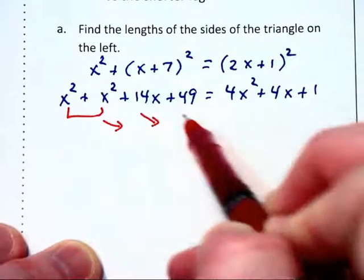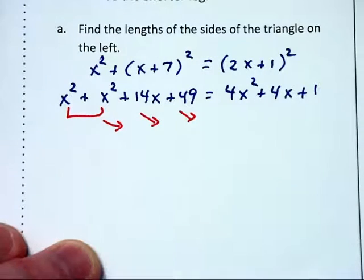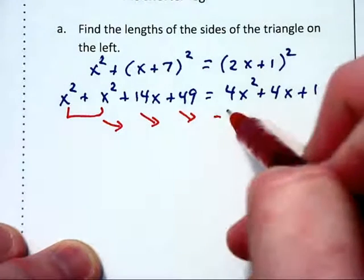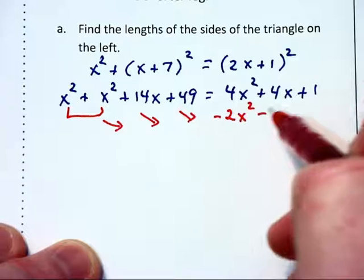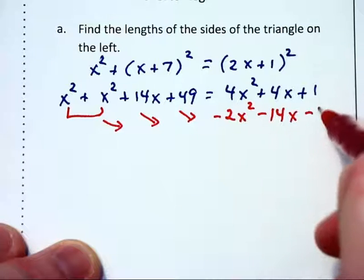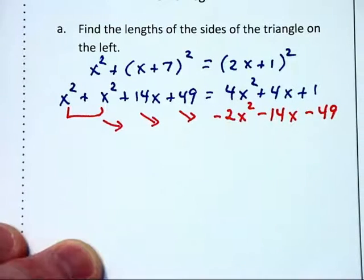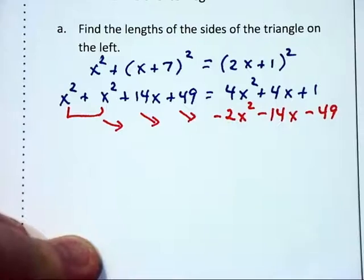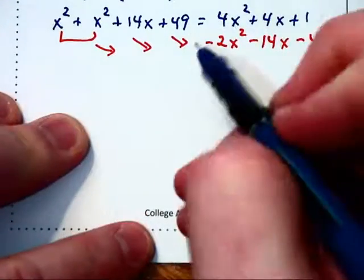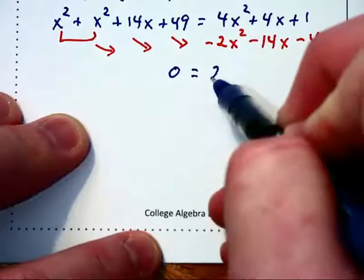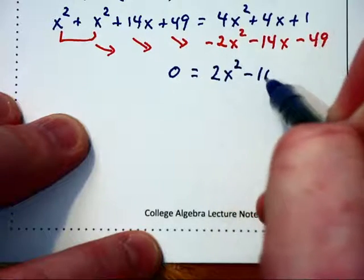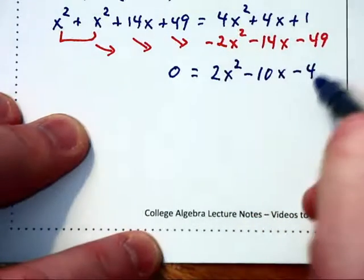Let's move everything to the right and set this equal to 0. So I'm going to subtract 2x squared, subtract 14x, and subtract 49 from each side of this equation. This leaves us with 0 equals 2x squared minus 10x minus 48.